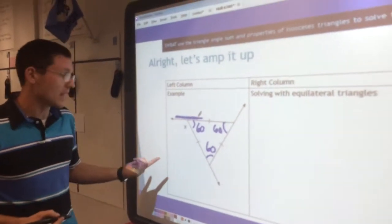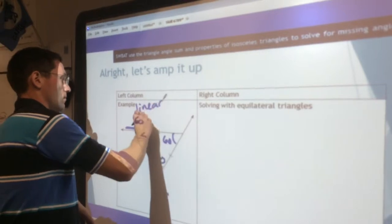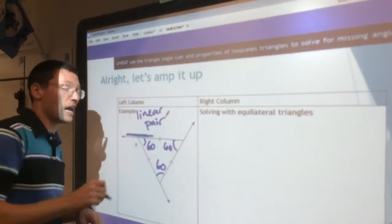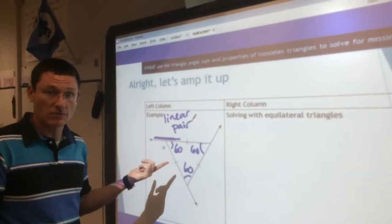And whenever we have that, we call that a linear pair. Right? So here is a linear pair. And just like triangles add up to 180, linear pairs always add up to 182.